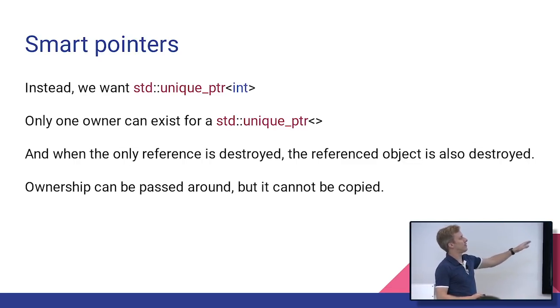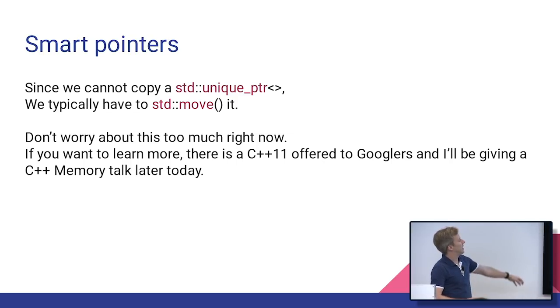And then, yeah, when the only reference is destroyed, the actual object is destroyed. So it's kind of like a garbage collected language where you can only have one reference at a time. That's kind of how it would work. And I mentioned you can't actually make a copy, but you can pass ownership. The way you pass ownership is with standard move, std move up there. That is a way to say, I'm completely done with this. I'm going to pass it off to somebody else.